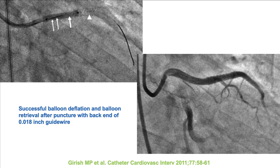In this particular case, puncturing the balloon was done by delivering the wire through the guide catheter pulled all the way toward the balloon. Sometimes a separate system may be needed — for example, a second guide catheter with a guide extension or an over-the-wire balloon — to bring the back end of a wire close to the balloon without injuring the proximal coronary artery.